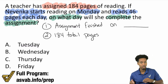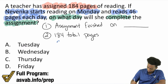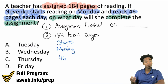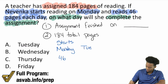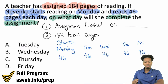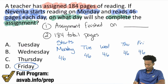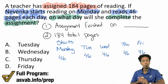So naturally, Nivanka starts on Monday — that's 46 pages each day. On Monday she reads 46 pages, Tuesday another 46, Wednesday another 46, Thursday another 46, Friday another 46. Friday is the last answer option so we stop there. This is the caveman method — you just keep adding 46 until you get to a total of 184.